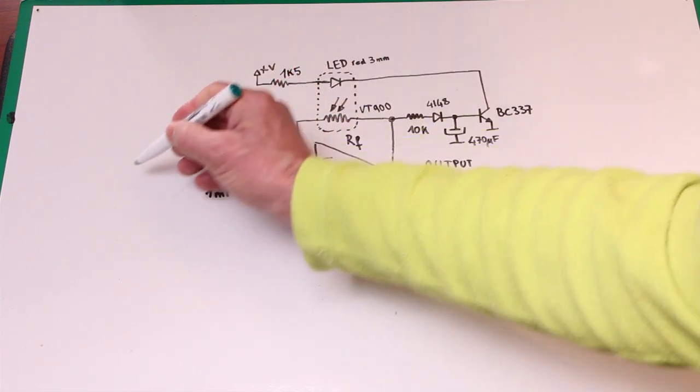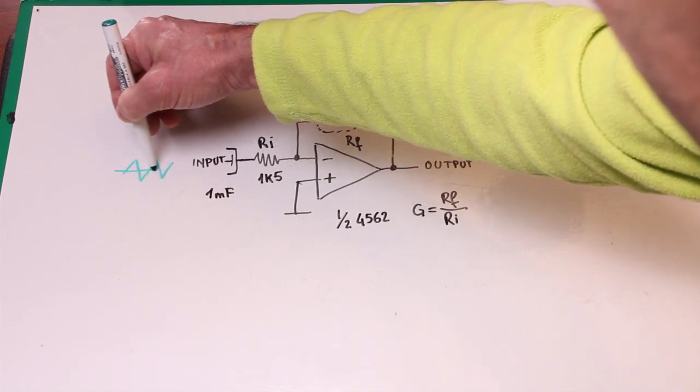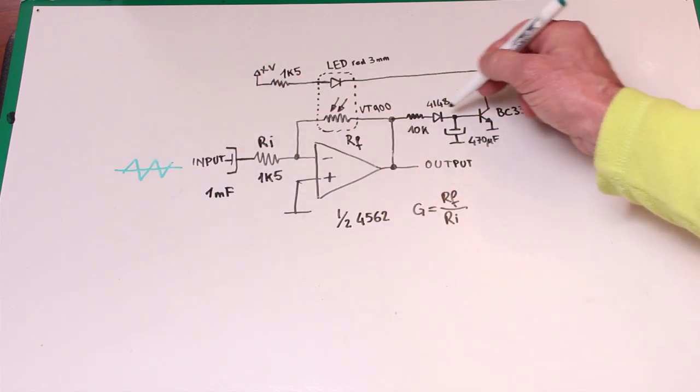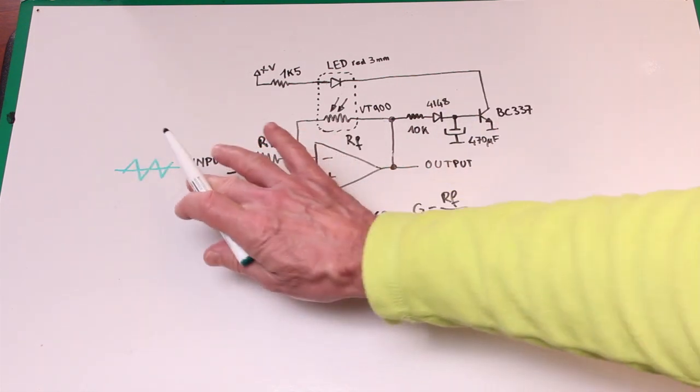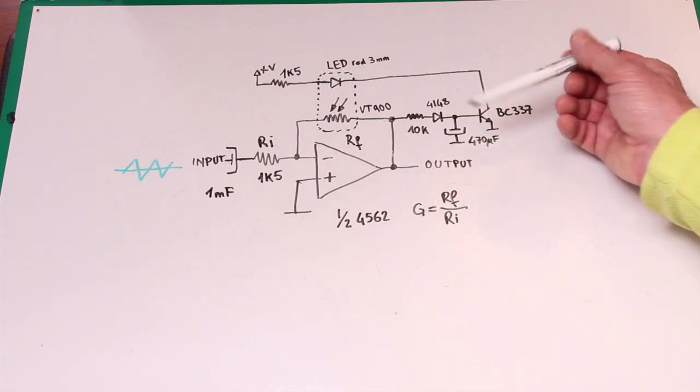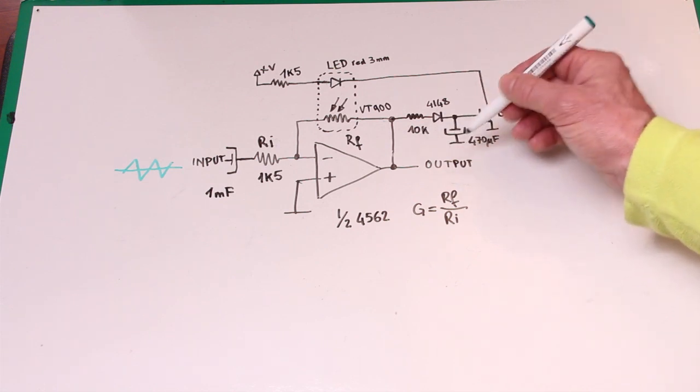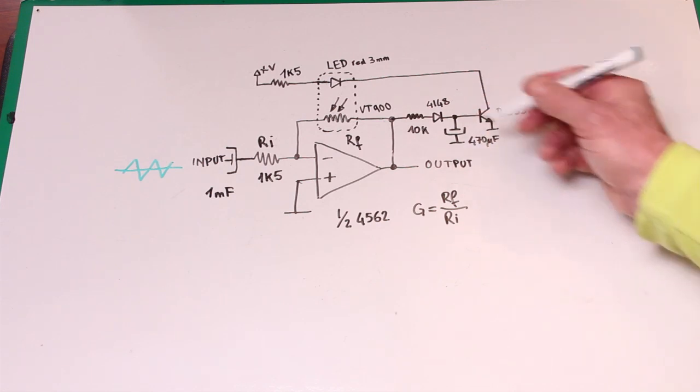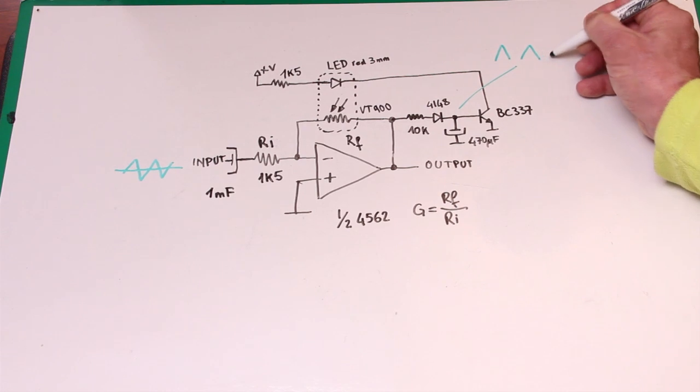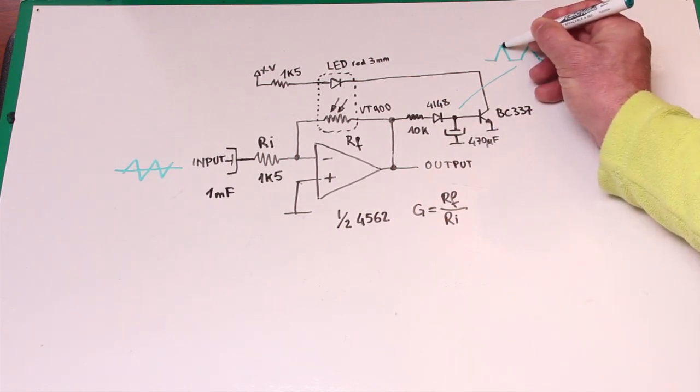When the signal is applied to the input only the positive side of the signal is passed through this diode. Of course I'm referring to the output because the output is reversed with respect to the input. This capacitor has the function to level these peaks, because without this capacitor here we would have something like this, but with the capacitor this will be leveled like this.